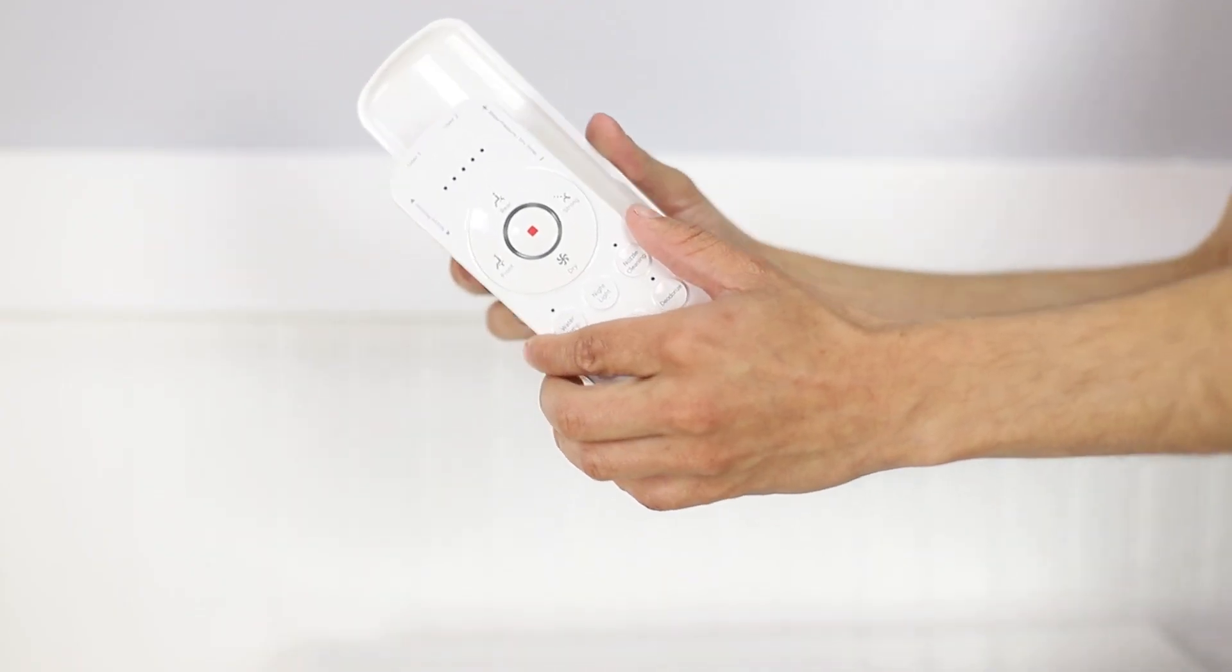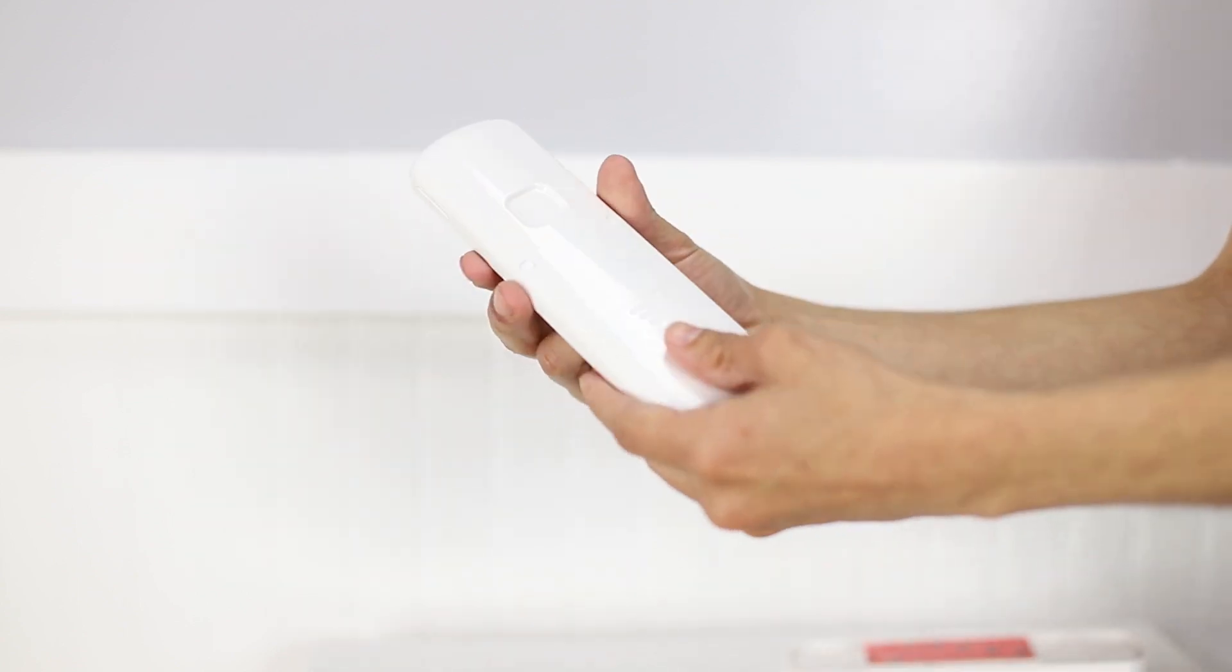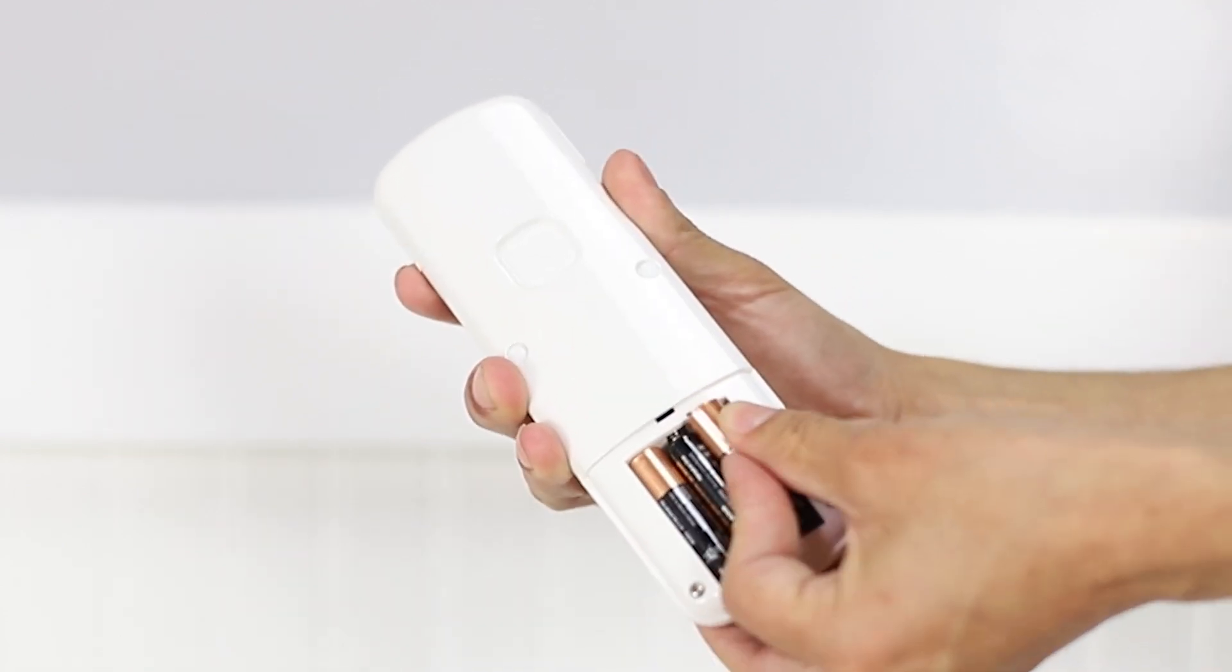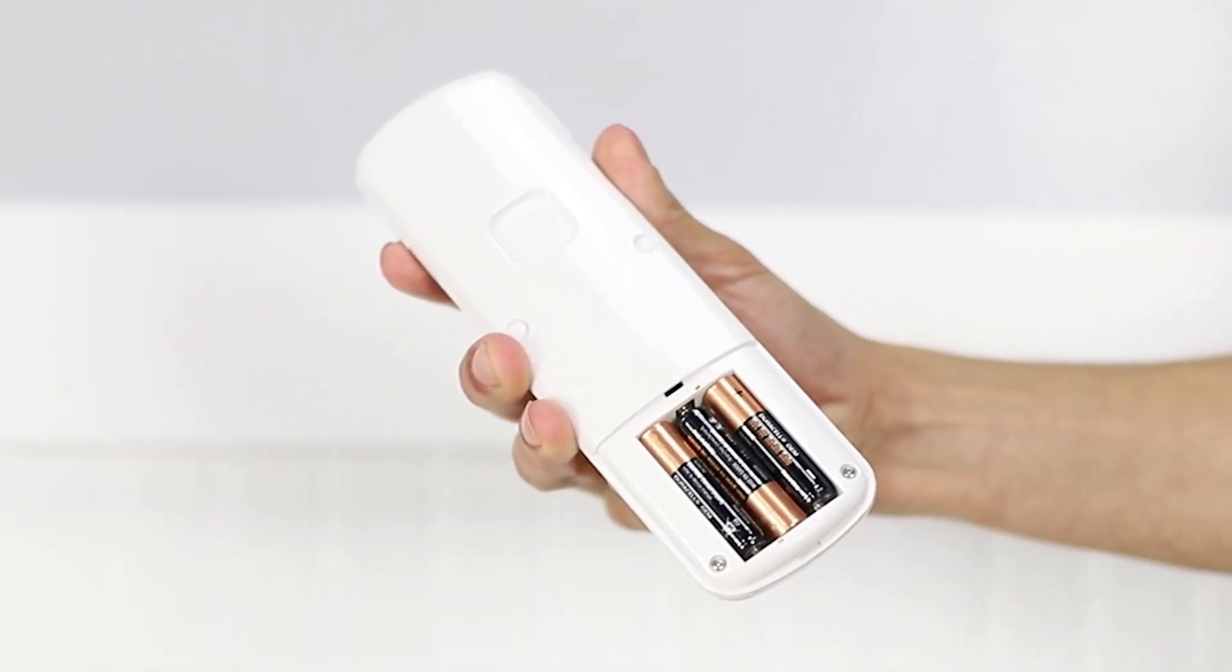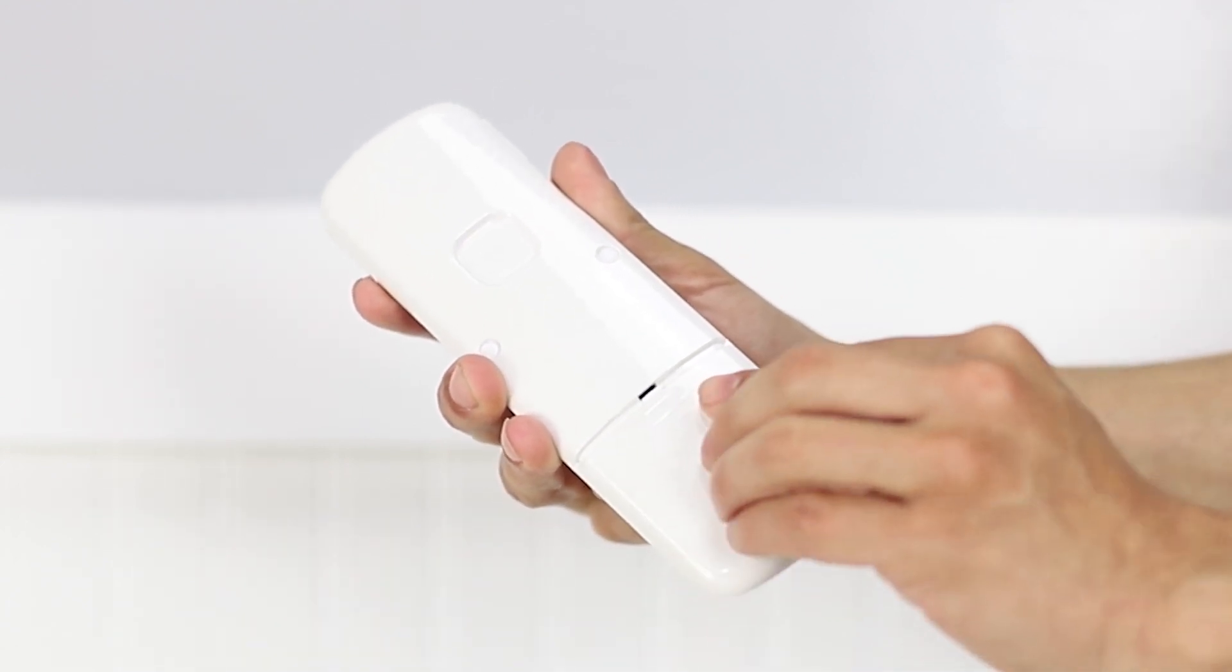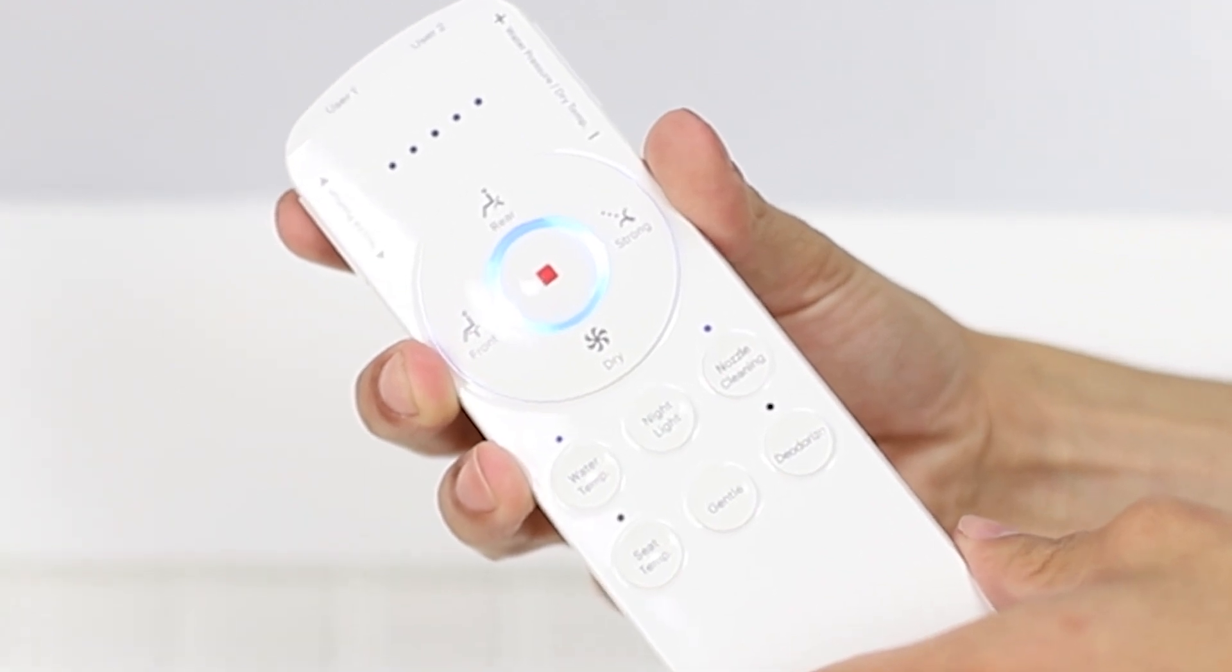To automatically pair the remote to the seat, install the batteries into the remote within 5 minutes of plugging the seat into a GFCI outlet. Slide off the battery cover and insert the three AAA batteries. To confirm the batteries were installed correctly, the circular blue LED light on the remote will light up.